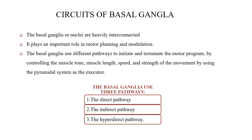The circuits of the basal ganglia: the basal ganglia are heavily interconnected and play an important role in motor planning and modulation. They use different pathways to initiate and terminate motor programs by controlling muscle tone, muscle length, speed, and strength of movement, using the pyramidal system as the executor. The basal ganglia use three pathways: the direct pathway, the indirect pathway, and the hyperdirect pathway.